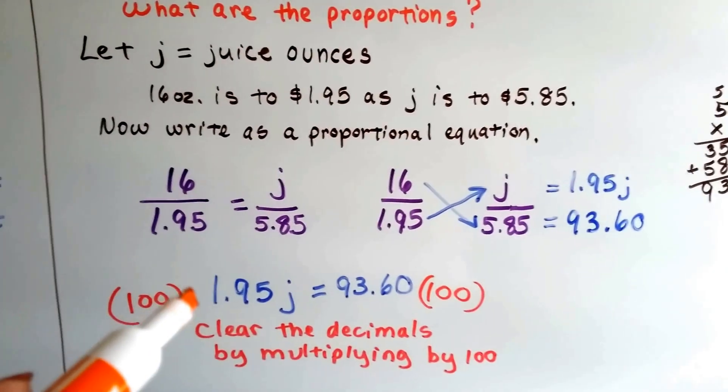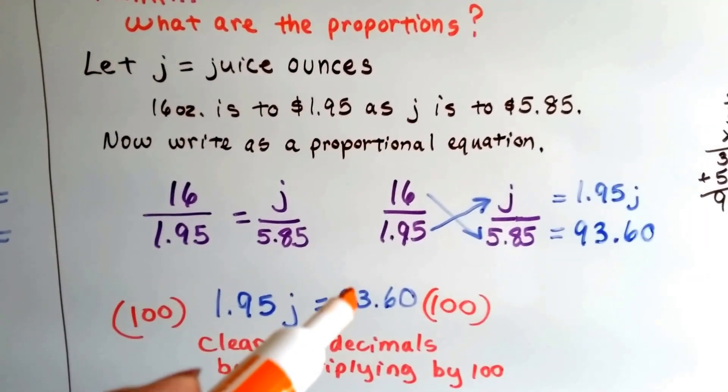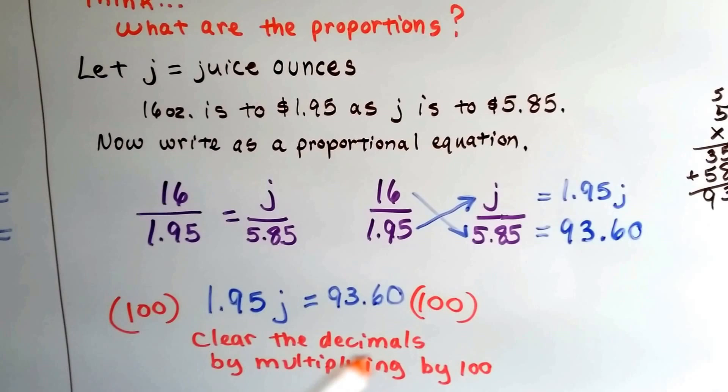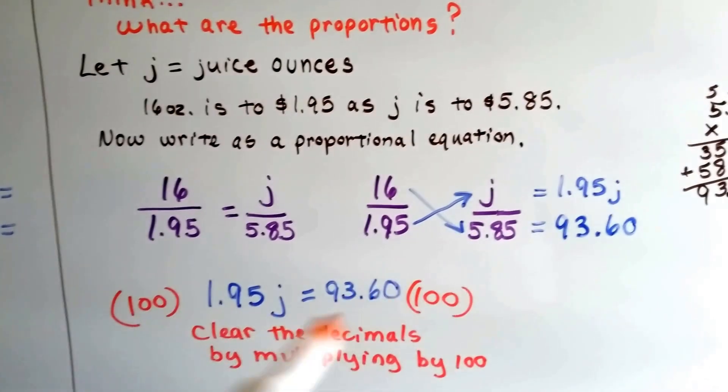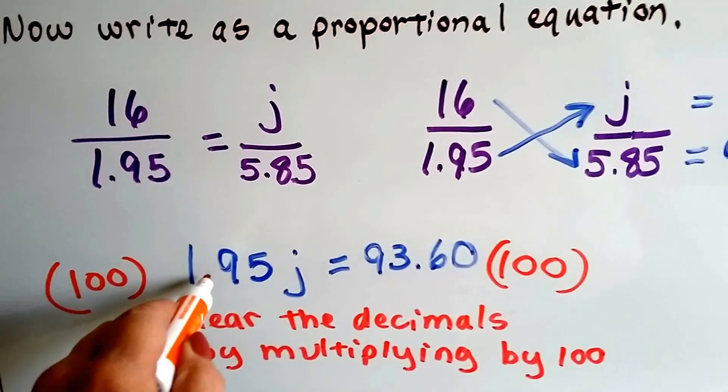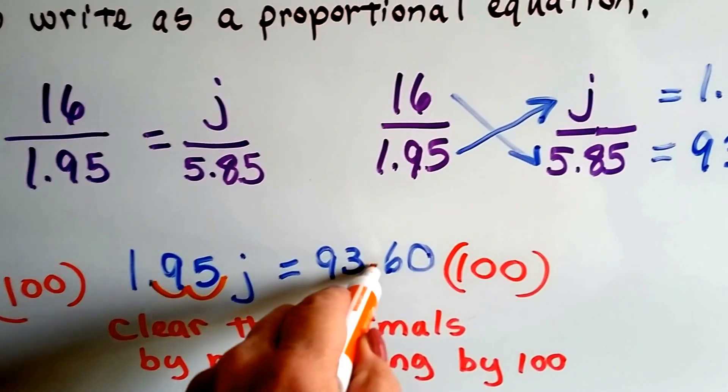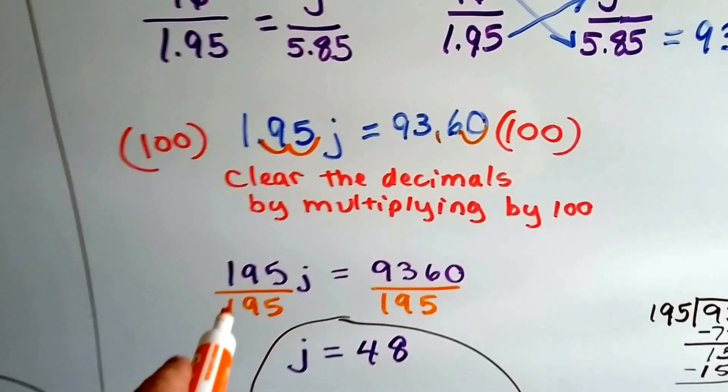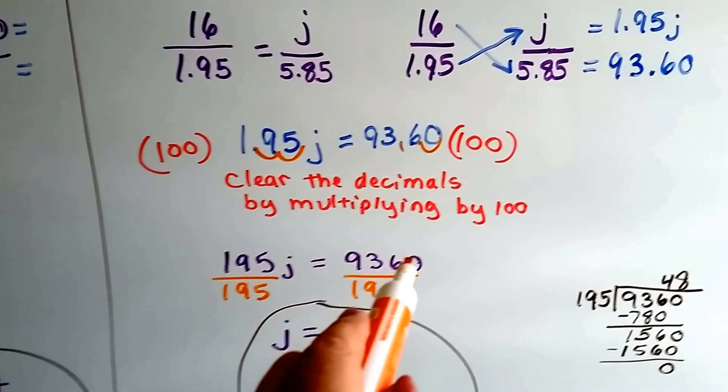The 1.95 j equals 93.60. We can clear these decimals off by multiplying both sides by 100. And that's going to move the decimal place over two spots, isn't it? 1, 2, and 1, 2. So now we've got 195 j equals 9360.